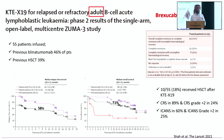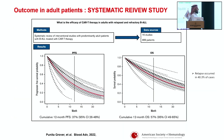The second CAR-T approved is Brexucabtagene, used mainly for adult patients 18 years or older. In the ZUMA-3 study — a phase 2, single-arm, open-label, multicenter study of 55 patients — prior blinatumomab was used in 46% and prior allogeneic transplant in 39%. Overall response was 71%, CR 56%, relapse-free survival 58%, and overall survival 71%. A large systematic review of 16 studies with 489 patients showed cumulative 12-month progression-free survival of 37% and 12-month overall survival of 57%.